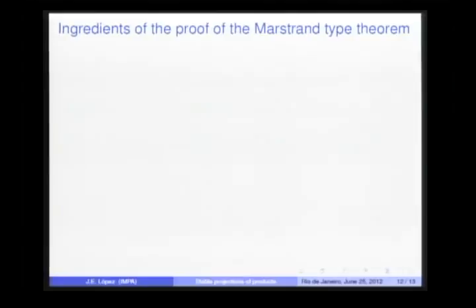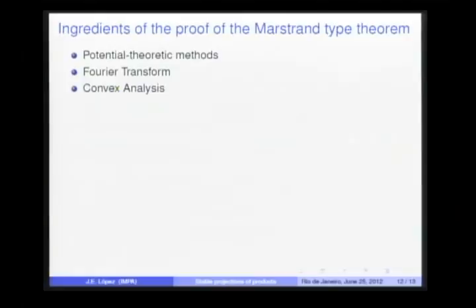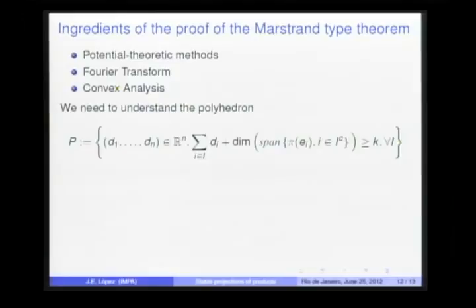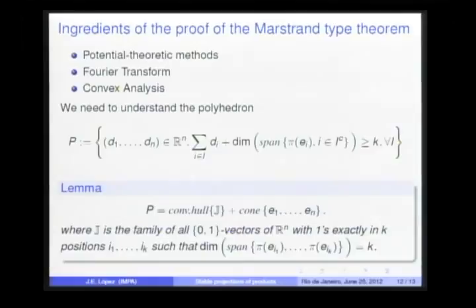Well, in the proof of the Marstrand-type theorem, we use potential-theoretic methods, Fourier transform, and convex analysis. And specifically, we need to understand the following polyhedron given explicitly by these 2ⁿ inequalities. The following lemma was crucial in the proof of the Marstrand-type theorem. This lemma gives an implicit form of the polyhedron.